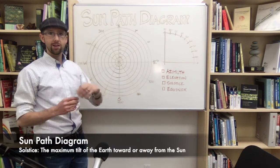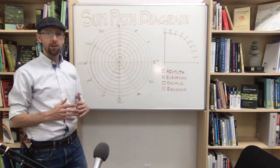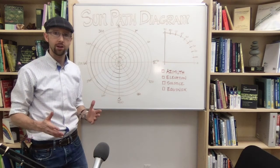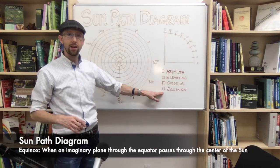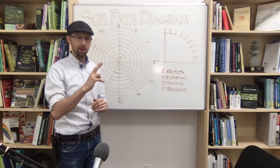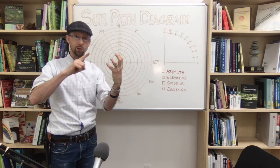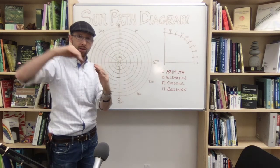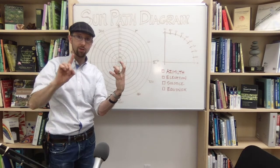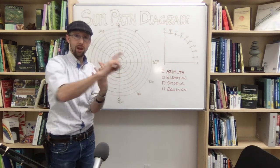The solstice is when the Earth is tilted relative to the sun at its maximum point. In the northern hemisphere, June 21st gives us the longest day and December 21st the shortest, with the sun making its lowest arc. The equinox is the halfway point in Earth's orbit where the plane through the equator passes through the sun — halfway between summer and winter solstice.